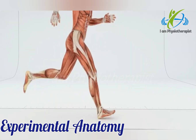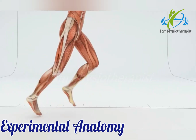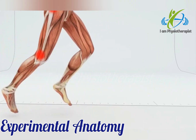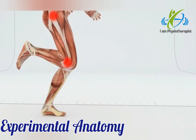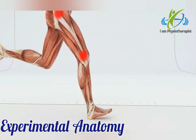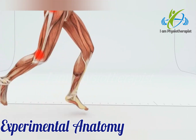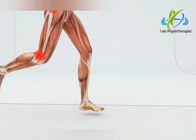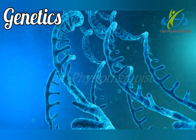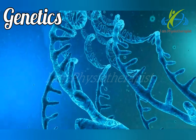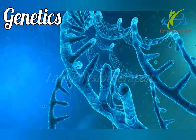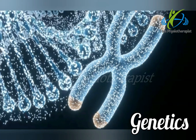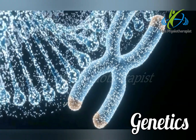Experimental anatomy — it is the study of the factors which influence and determine the form, structure, and function of different parts of the body. Genetics — it deals with the study of information present in the chromosomes.